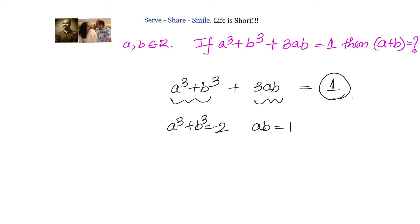We will write down (a+b)³ = a³ + b³ + 3ab(a+b). Let us say a + b = x, which is what we need to find. Then we have x³ = -2 + 3(1)x.